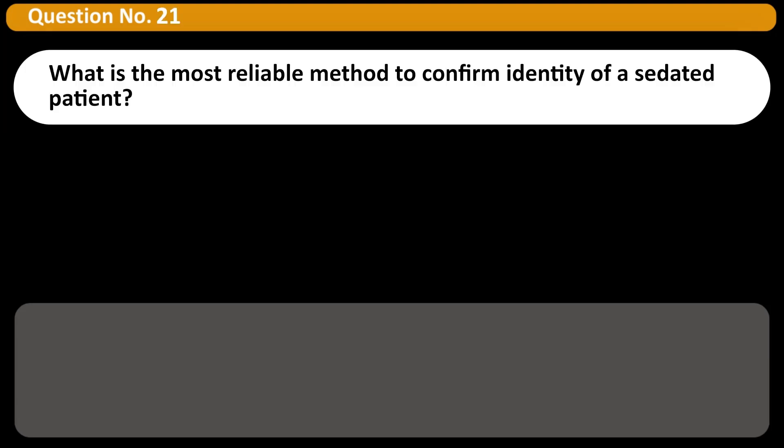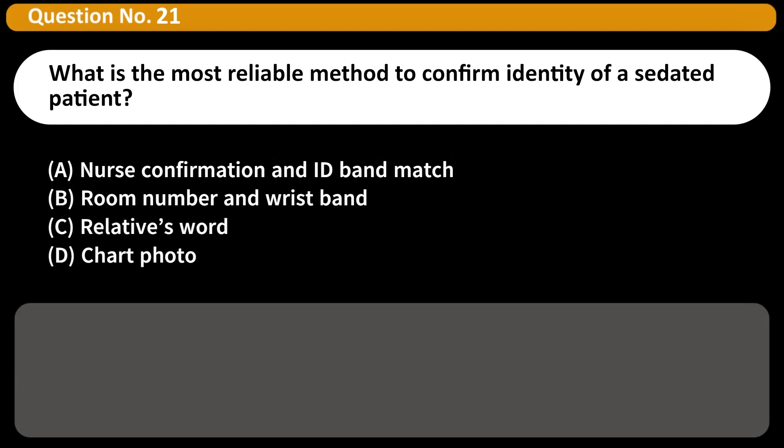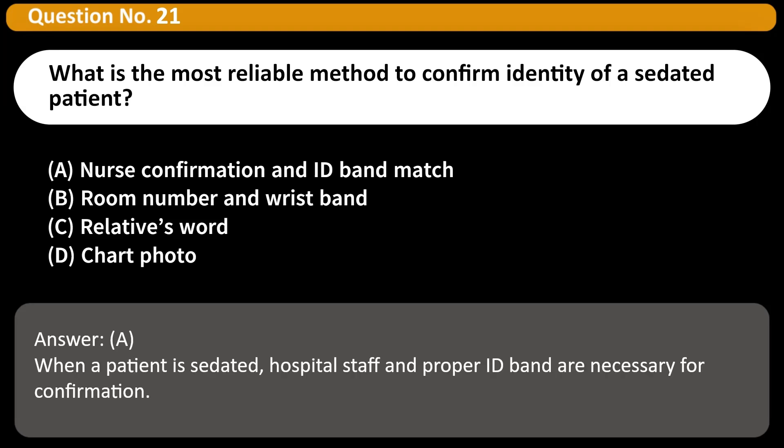What is the most reliable method to confirm identity of a sedated patient? A. Nurse confirmation and ID band match. B. Room number and wristband. C. Relative's word. D. Chart photo. Answer: A. When a patient is sedated, hospital staff and proper ID band are necessary for confirmation.